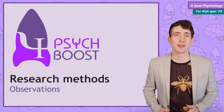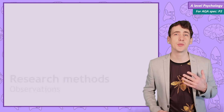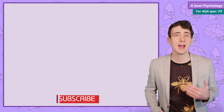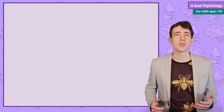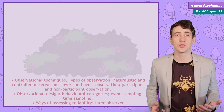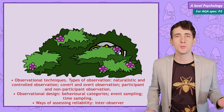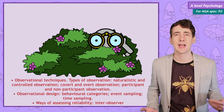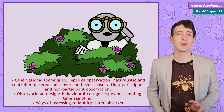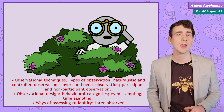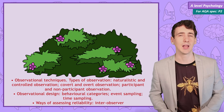In this research methods and psychology video, I'll be taking you through the various observational types and the strengths and weaknesses of each. I'll also discuss observational techniques such as identifying behavioural categories and the difference between event and time sampling. I'll finish by telling you how to check the reliability of results by carrying out a test of inter-rater reliability.